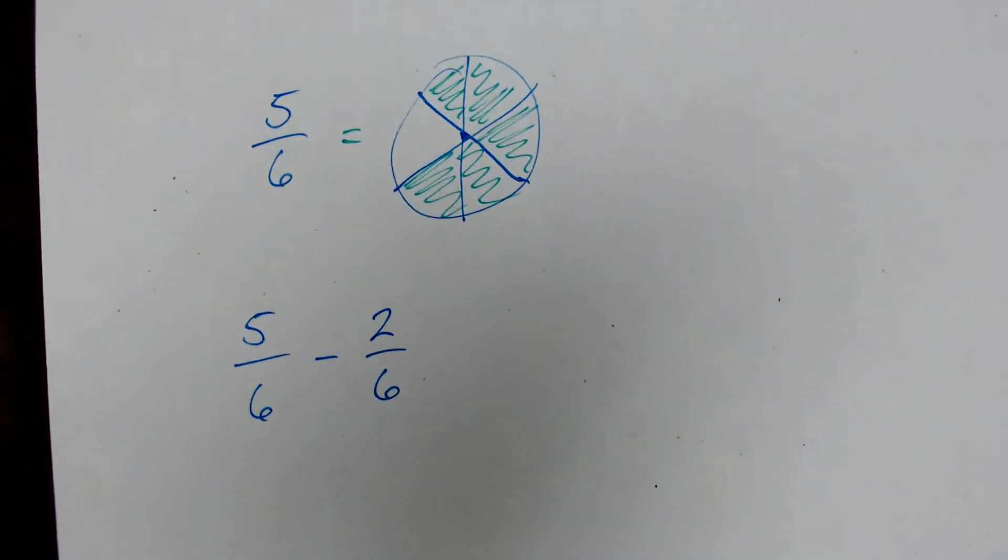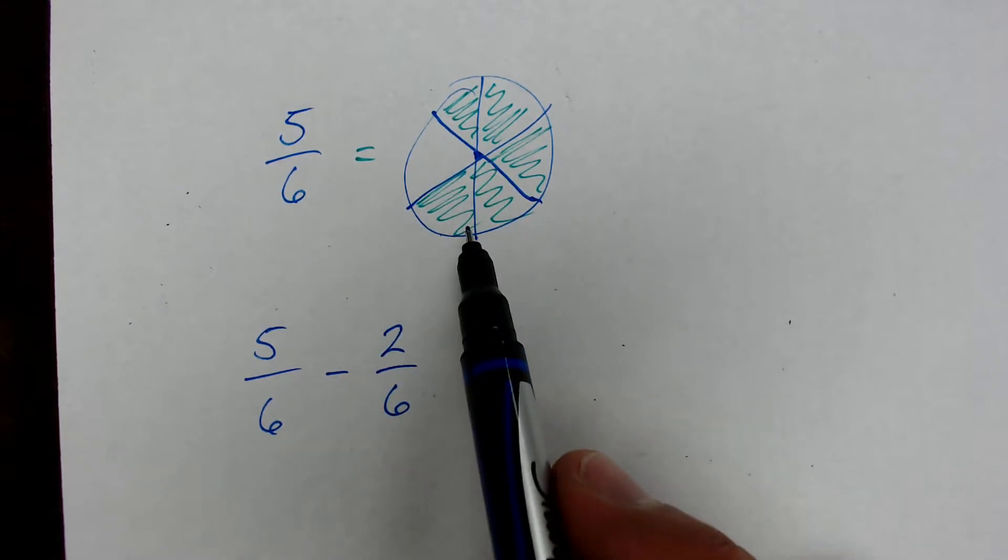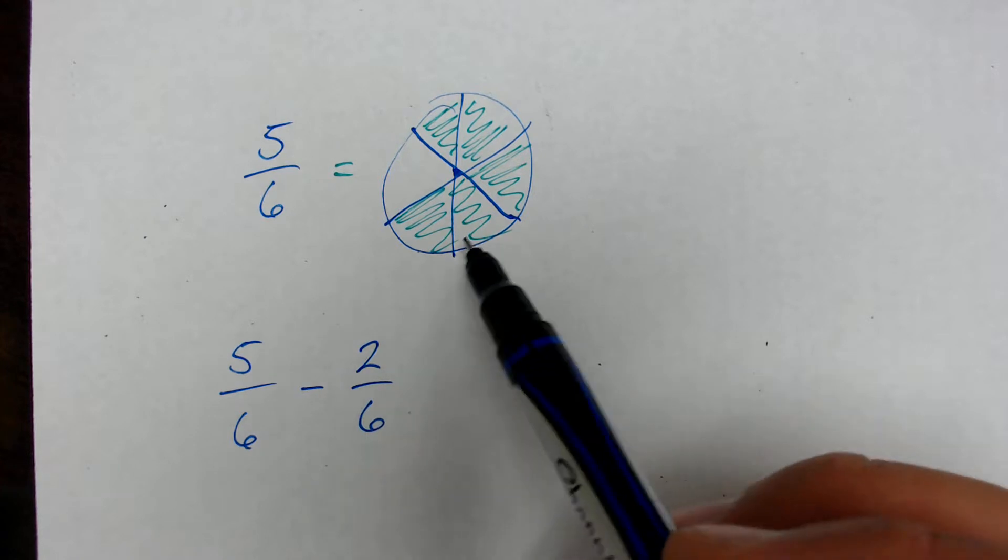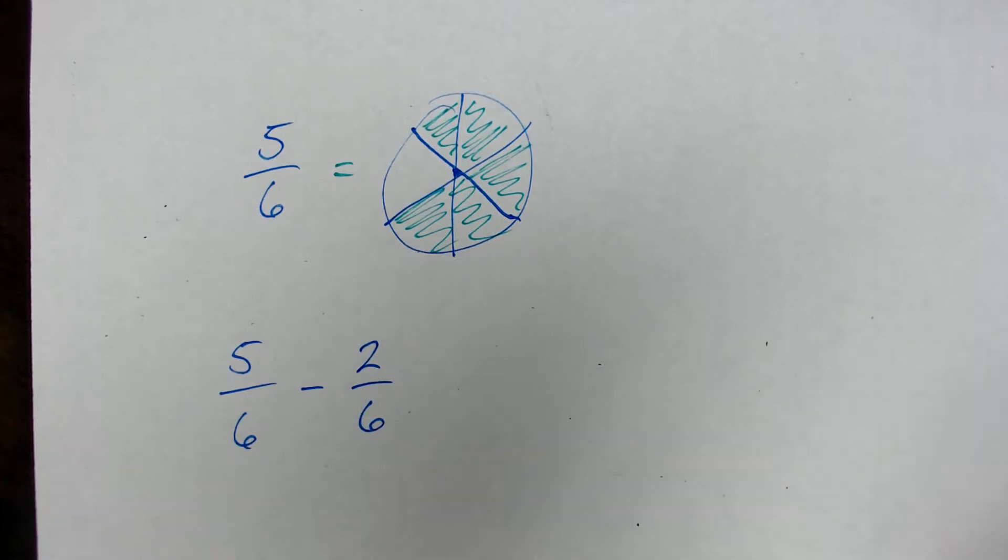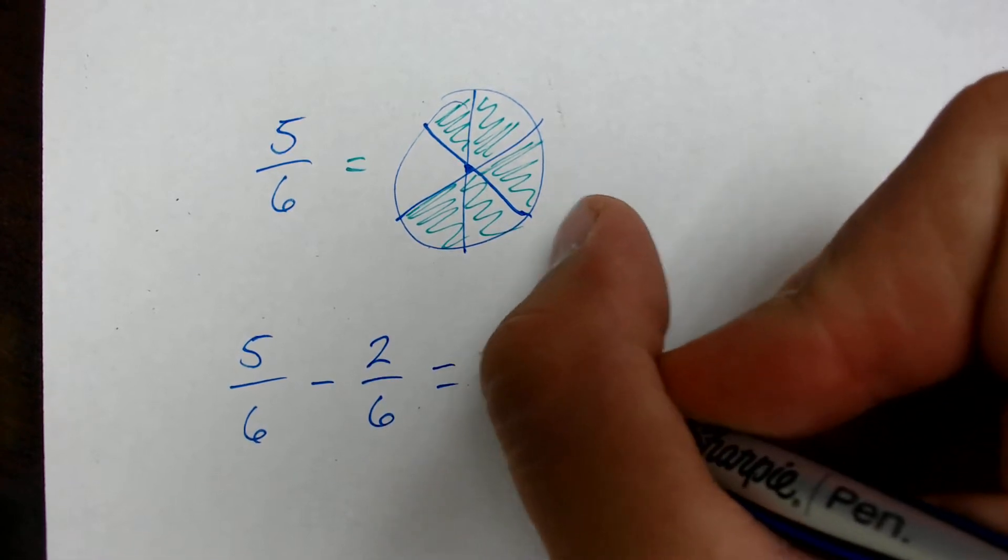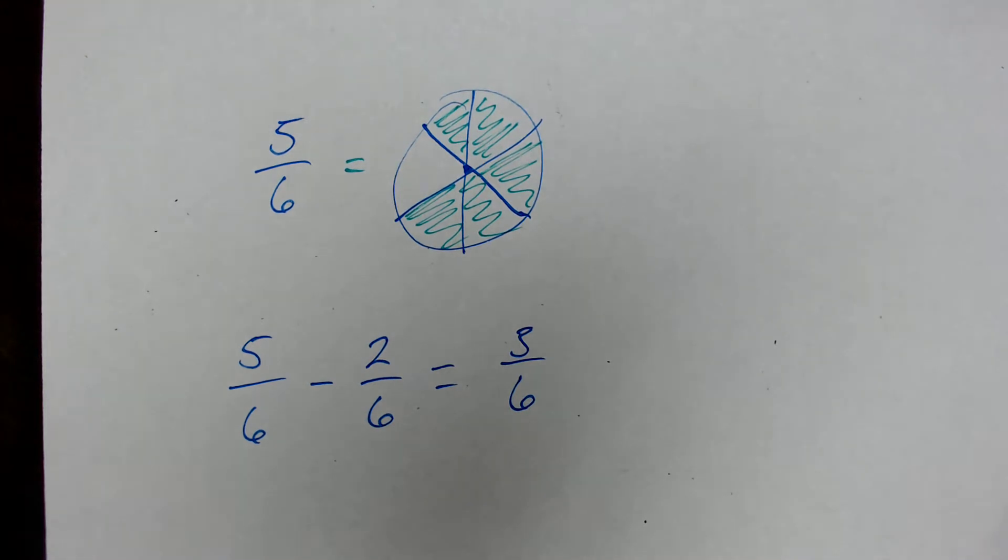So what's happening here is I have five groups of six, and I'm subtracting of those five groups. I'm taking two away. So let's say I've got one, two, three, four, five, and I want to take away two of these groups. How many groups would I have left over? Well, I would have three, three groups that are part of a group of six, right?